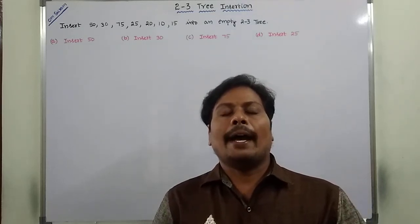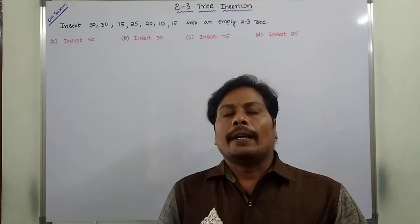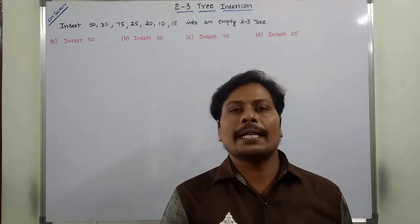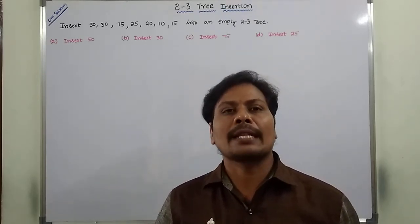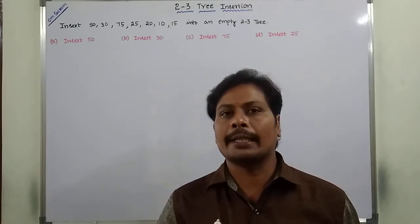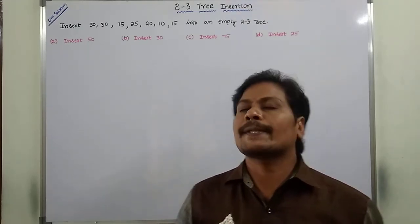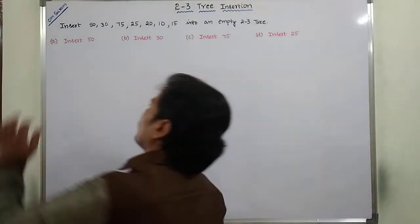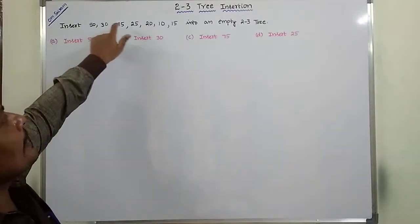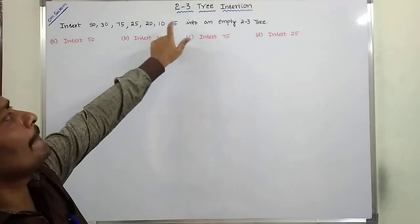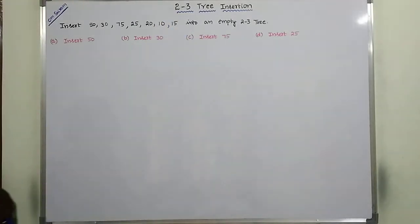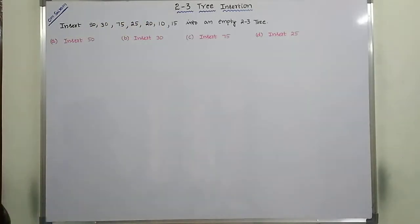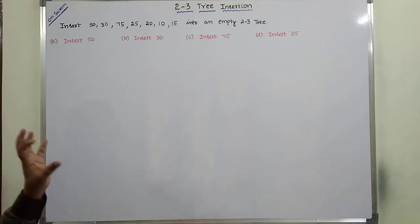Hi friends, today I am giving a lecture on another example problem on 2-3 tree insertion. In the previous video, I solved one example problem with the help of the algorithm. Now in this video, I am solving another example problem on 2-3 tree. So, insert 50, 30, 75, 25, 20, 10, 15 into an empty 2-3 tree. Before inserting all the elements, the 2-3 tree is empty.